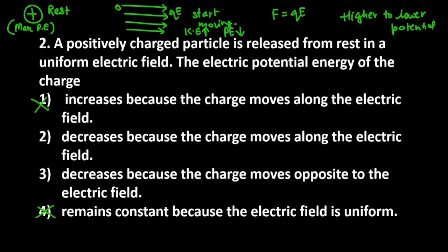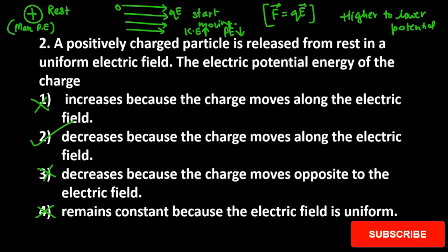You can see here, there are two options where energy is decreasing. And why it is decreasing? Because it is moving along the electric field. As I told you, it is moving along QE. This means right option is second one, not the third one.